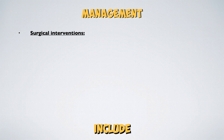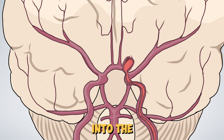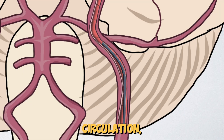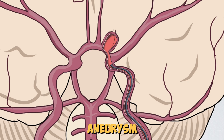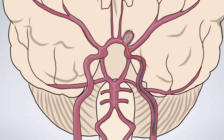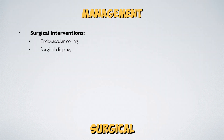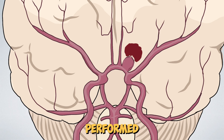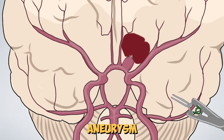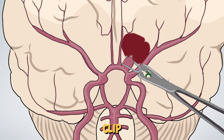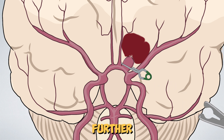Surgical options include endovascular coiling, where a catheter is passed into the cerebral circulation to the location of the bleeding aneurysm and a coil is inserted. This compacts the aneurysm and prevents further bleeding. Surgical clipping is another option, where a craniotomy is performed, the bleeding aneurysm is located, and a surgical clip is attached to stop further bleeding.